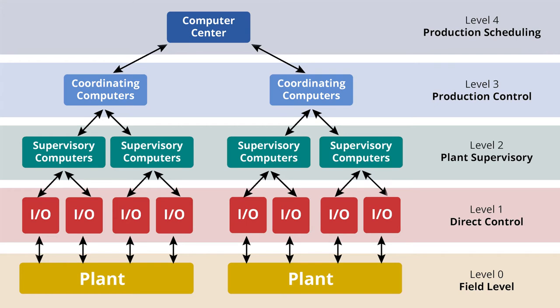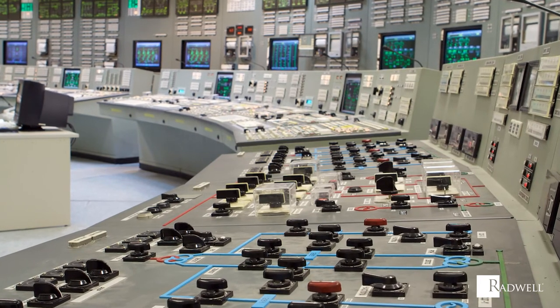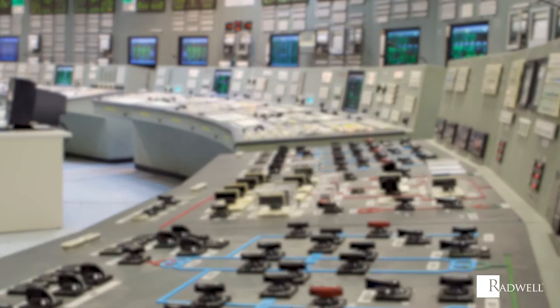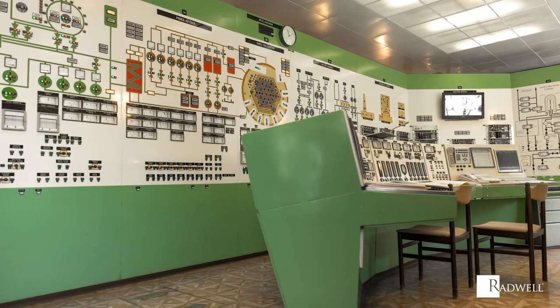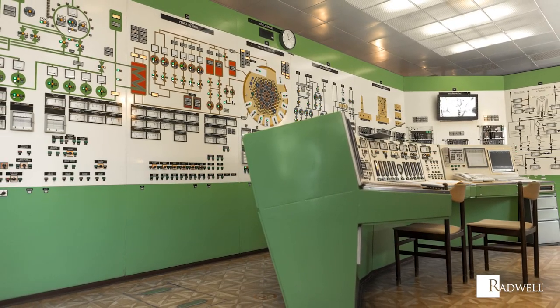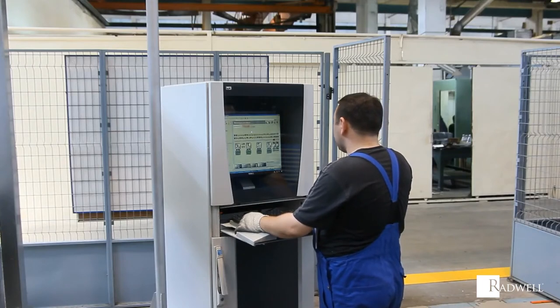Distributed control systems are typically used in manufacturing processes that are continuous or batch oriented. This includes chemical plants, pulp and paper mills, power plant systems, automobile manufacturing, food processing, agricultural applications, and more.